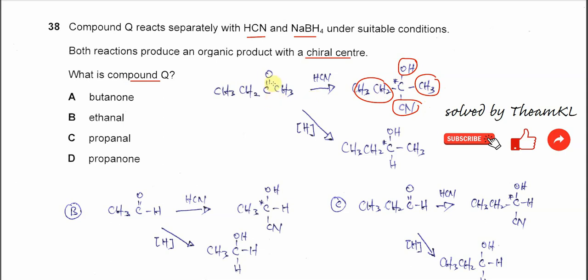When butanone undergoes reduction using sodium borohydride, this oxygen will get one hydrogen and this carbon will also get one hydrogen to form this alcohol. This compound also has one chiral center because this carbon has one, two, three, four different groups.